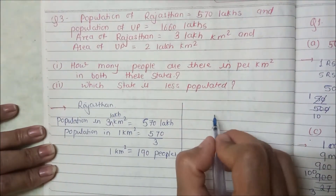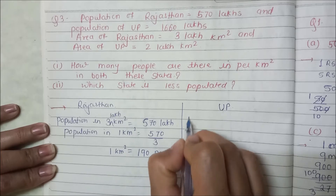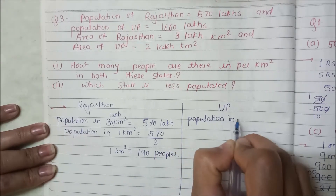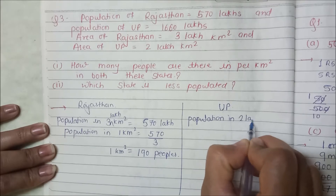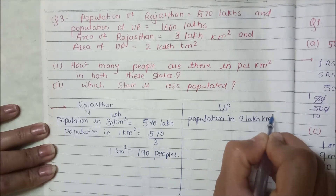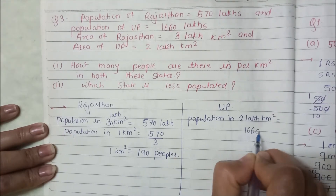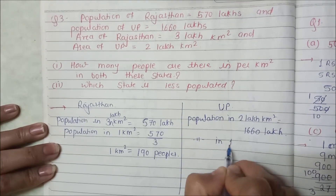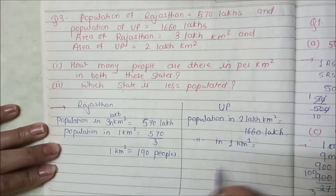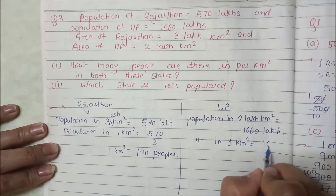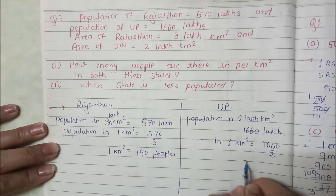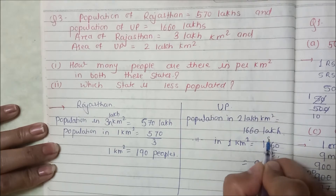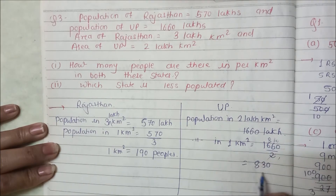Now let's talk about UP. In UP, the population is 1660 lakhs and the area is 2 lakh km². So if we calculate population per 1 km² area: 1660 divided by 2 equals 830.